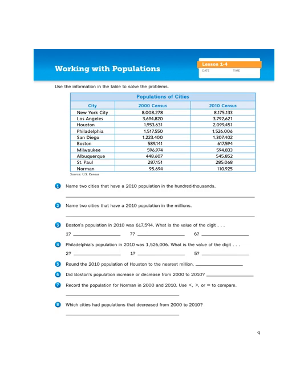Hi boys and girls, today we are going to be looking at how do we identify, compare, order, and round numbers that exceed 1 million. We are in our math journal on page 9 for Unit 1, Lesson 4. Working with Populations is the name of the activity.